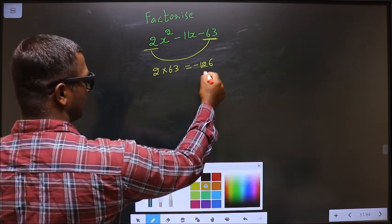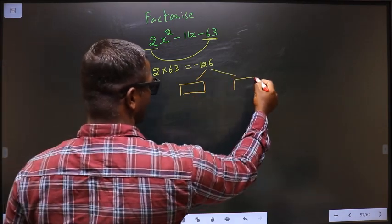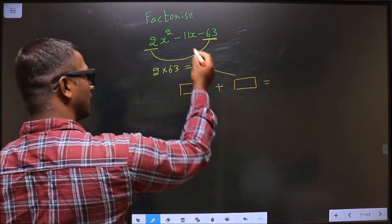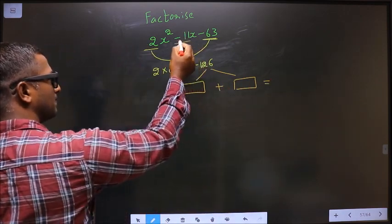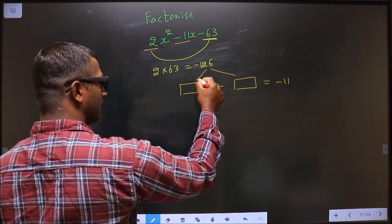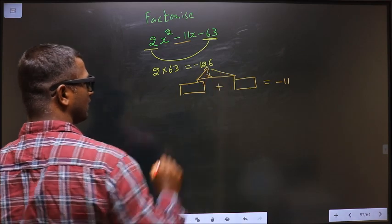Next, now you should look out for 2 numbers such that when you add the 2 numbers, you should get x coefficient that is minus 11. And also, when you multiply these 2, you should get minus 126.